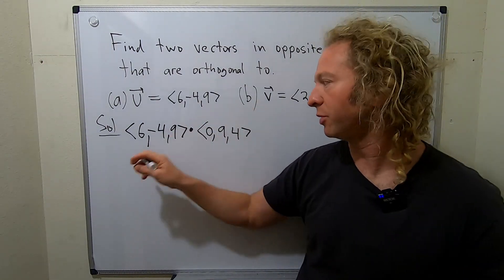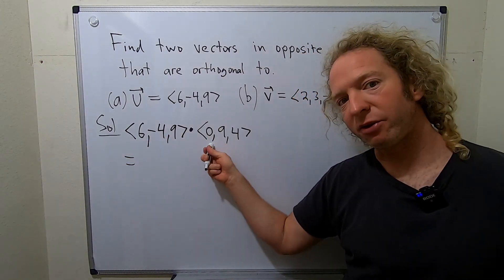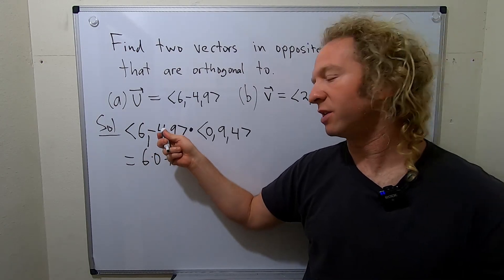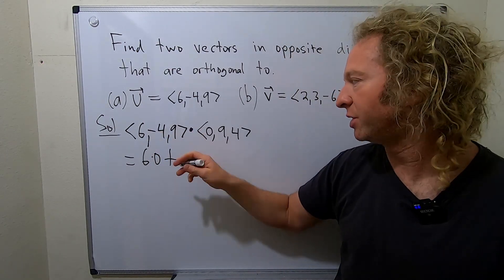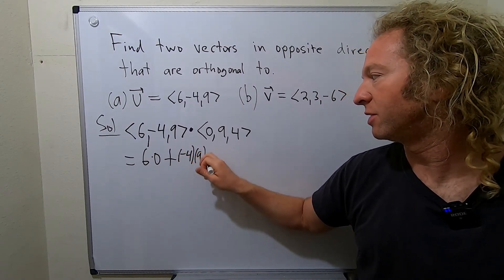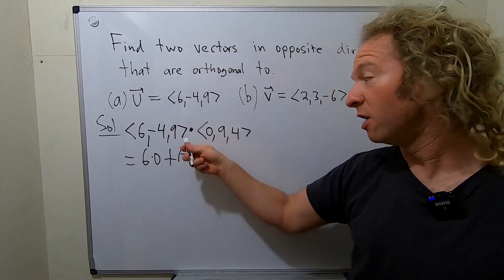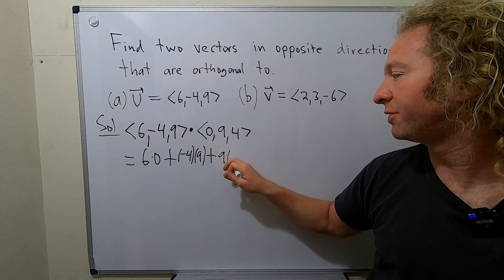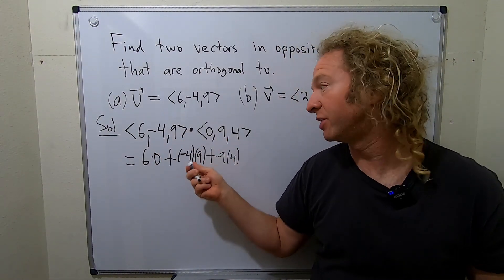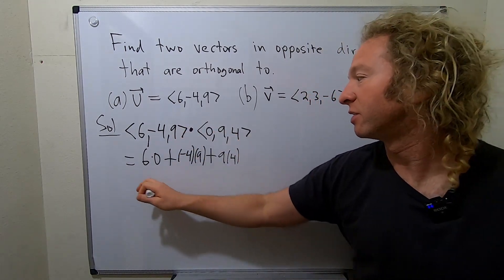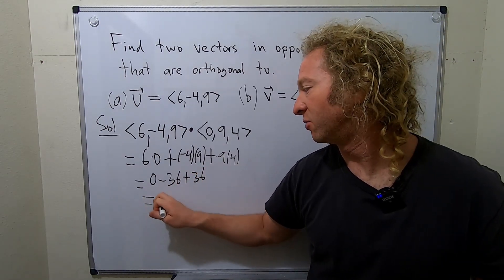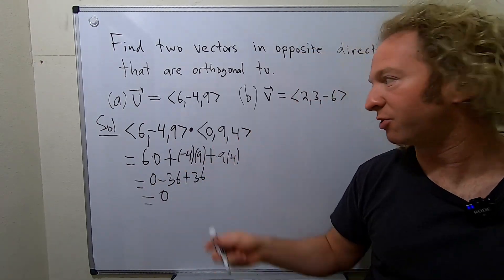And the reason is, well you'll see. So we do 6 times zero. So 6 times zero which is just zero but I'll write it. Plus, and then watch this. Negative 4 times 9 which is negative 36. And then here's the key. Plus 9 times 4. So they're opposites. It results in like an opposite product. Negative 4 times 9 is negative 36. 9 times 4 is 36. So it'll be 0 minus 36 plus 36. And that's equal to 0 plus 0 which is 0.